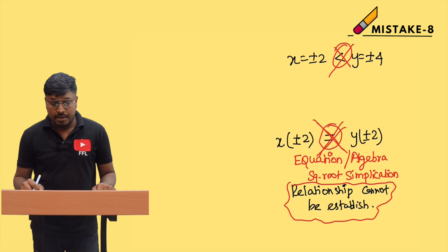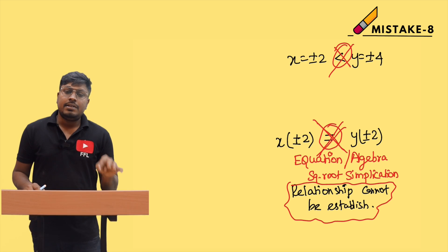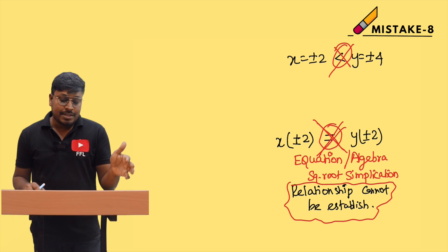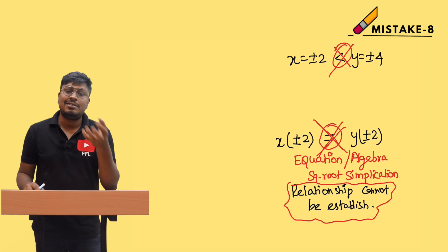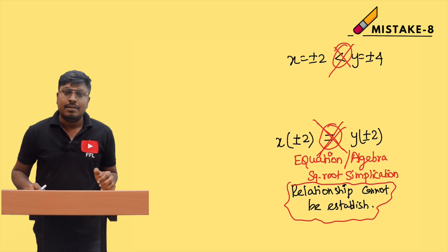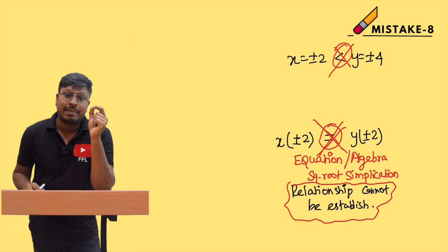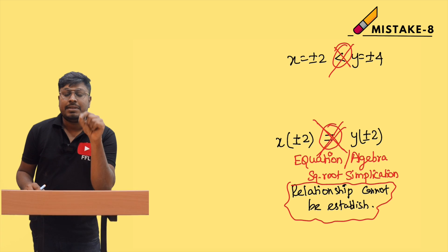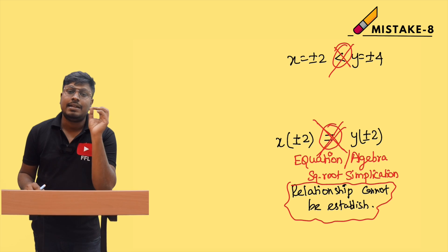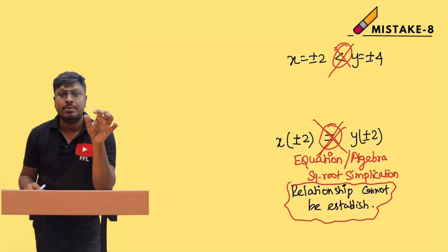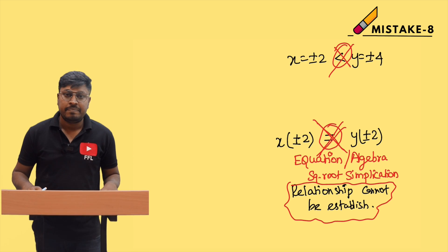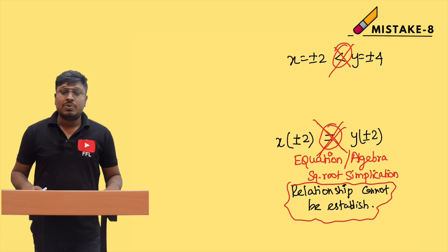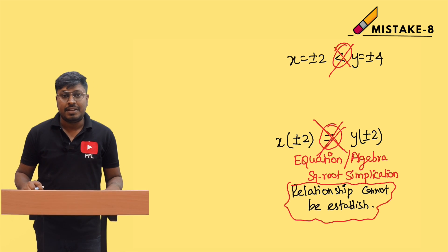So don't make this mistake in the equation topic, where you will see this most often. For fraction values, decimal values, or positive/negative comparisons, the techniques are straightforward. The only area where students consistently make a mistake is the ± comparison — marking it as 'equal to' when the answer is 'relationship cannot be established.' Thank you so much for watching, and don't make this mistake again in your exams.